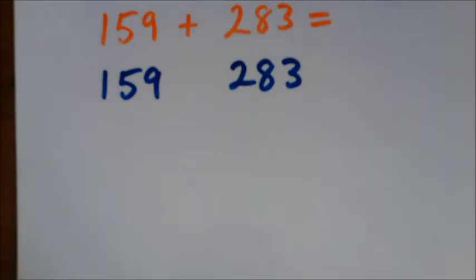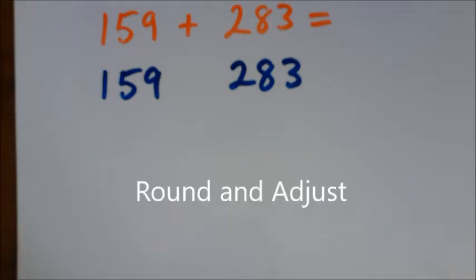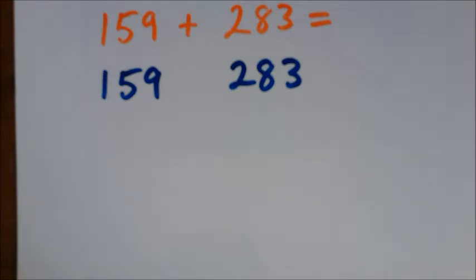We're using a method that we taught you at the beginning of Year 4. There's lots of methods for doing addition, but this one can be very useful. Sometimes it's called round and adjust, and sometimes we call it the house number method. In this video, we're going to pause about six times to see if you have fully understood the six steps that we're going to use for this method.